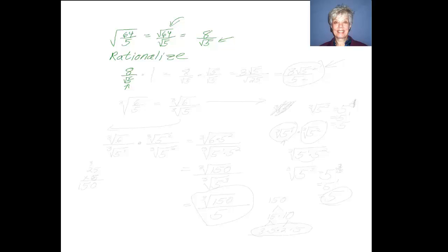Well, maybe it's not so simple. But I do know that if I multiply the square root of 5 times the square root of 5, I'll get the square root of 25, which is 5 without a radical. I'm going to multiply by 1, because when I multiply by 1, I don't change whatever I'm multiplying. So 8 over the square root of 5 times 1 is just 8 over the square root of 5.